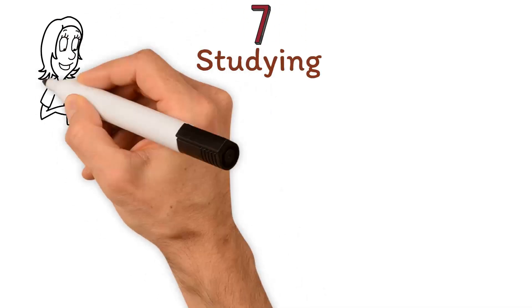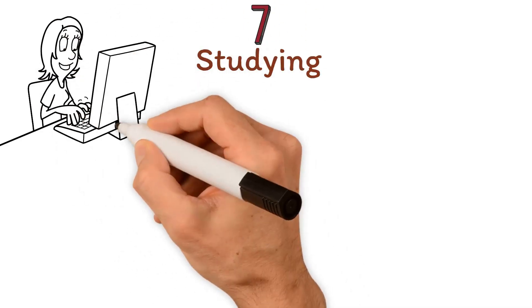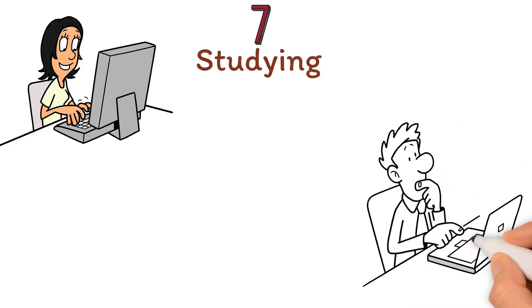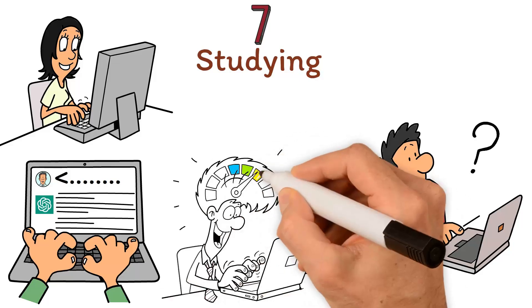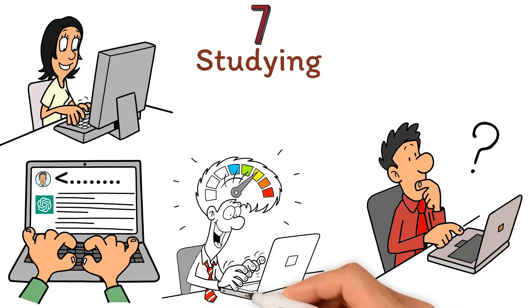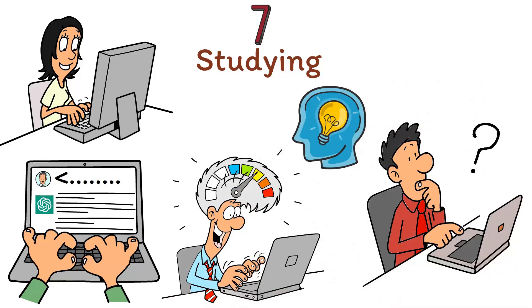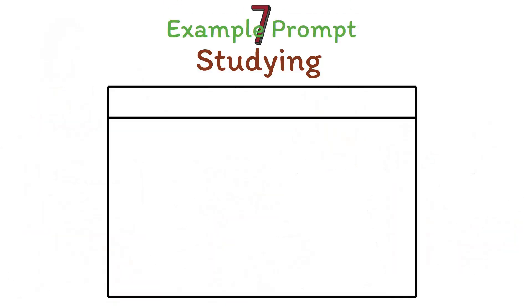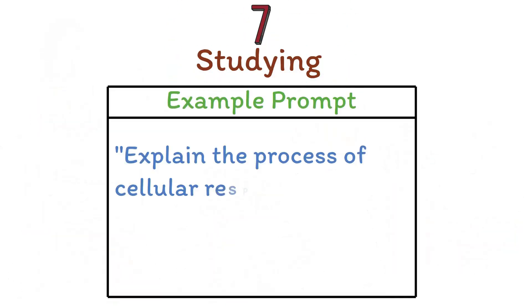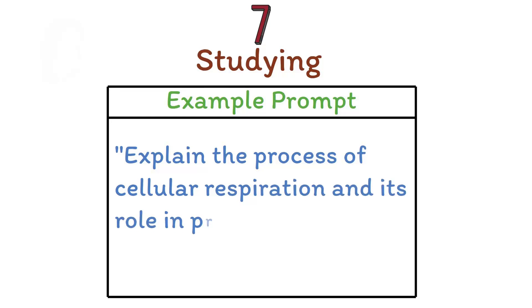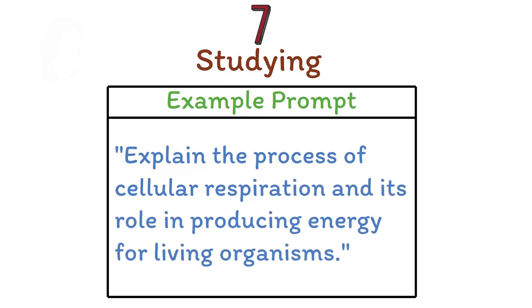Number seven: studying. Students can also benefit from ChatGPT when it comes to studying. By asking questions or requesting explanations of concepts, learners can receive immediate and accurate responses, bolstering their understanding of the material. Example prompt: Explain the process of cellular respiration and its role in producing energy for living organisms.